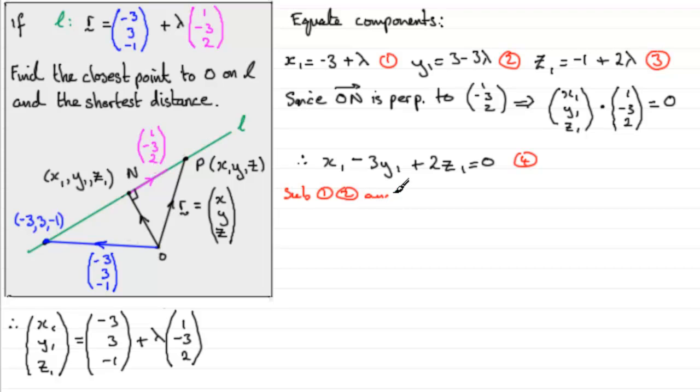So let's just say that we'll sub 1, 2, and 3 into 4. So what do we get? Well, for x1 then, we've got -3 plus lambda, -3 plus lambda, minus 3 times y1, so 3 times (3 minus 3 lambda), plus 2z1, so it's 2 lots of (-1 plus 2 lambda), that equals 0. So let's go. And if we expand out the brackets here, well, we've got -3 plus lambda, -9 plus 9 lambda, -2 plus 4 lambda, equals 0.